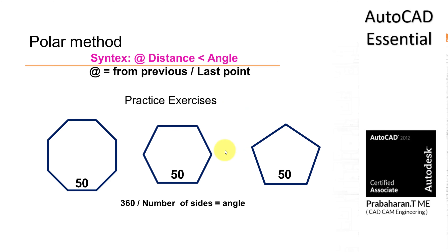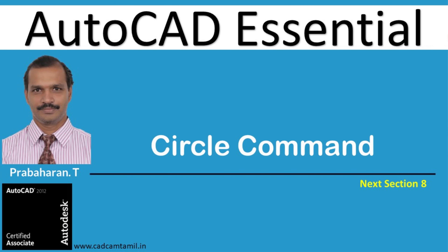Based on this, I am going to give you some exercise. The first object has 8 sides — that is an octagon — equilateral, all sides 50 mm. You know how to find out the angles. Using the polar method, you are going to draw this octagon, this hexagon, and this pentagon. This is your exercise — try this using the polar method only.